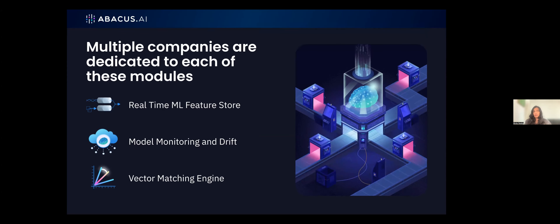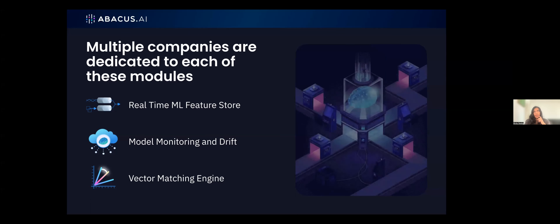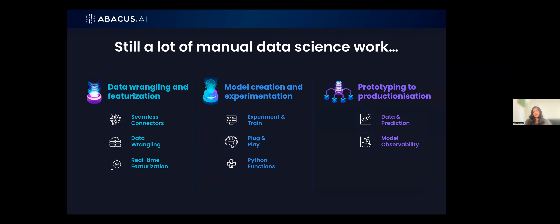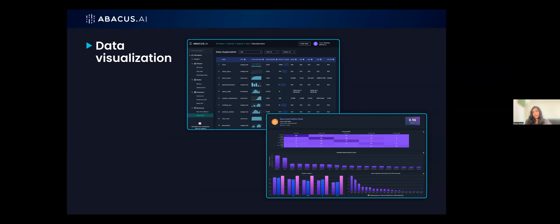A lot of companies are dedicated to individual modules — feature store companies, model monitoring and drift companies, vector matching companies. There is a lot of manual data science work: data wrangling, featurization, model creation, experimentation, prototyping, productionization. Part of this is dashboarding — you want to automatically create dashboards for your datasets so you can understand your data without writing code. Abacus provides exploratory dashboards that let you look at outliers, distinct values, shape, and size of the data, all automatically pipelined.